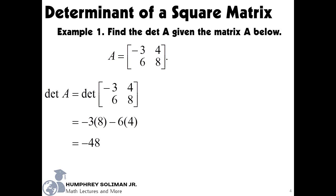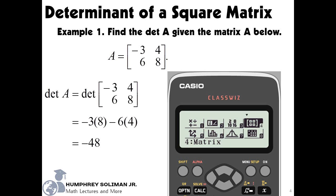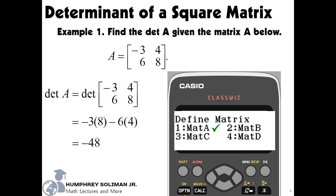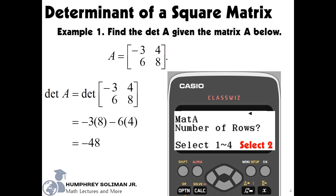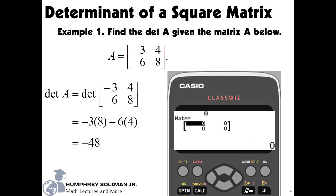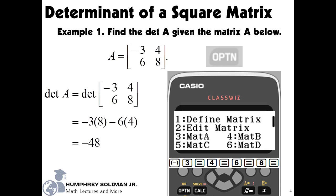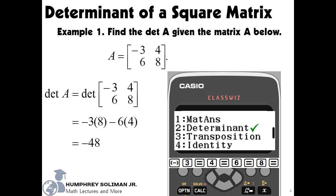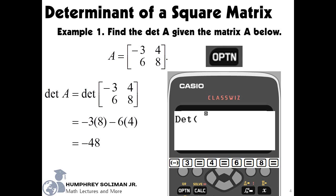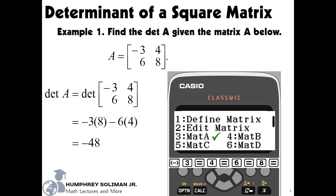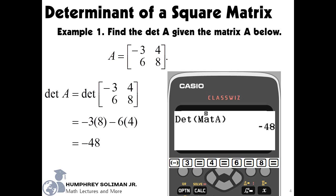We can check this by using a Casio ClassWiz calculator. In matrix mode, we first need to define matrix A — choose option 1. Enter the number of rows, select 2. Enter the number of columns, select 2. We are now ready to input the elements of matrix A. You can follow the string of keys if you like. Then clear the screen, press the option key, then the down direction key to go to the second page of the menu. Select determinant, option 2. Press the option key and choose matrix A, select option 3. And finally, the determinant of matrix A is equal to negative 48.